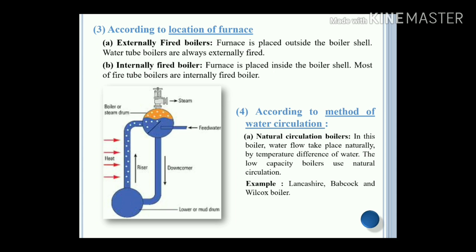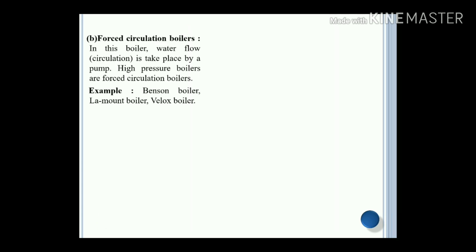Fourth, according to the method of water circulation. Natural circulation boiler: water flow takes place naturally due to the temperature difference of the water. Low capacity boilers usually use natural circulation. Examples: Lancashire boiler, Babcock and Wilcox boiler. Forced circulation boiler: water flow takes place by a pump. High pressure boilers are always forced circulation boilers. Examples: Benson boiler, Velox boiler, LaMont boiler.